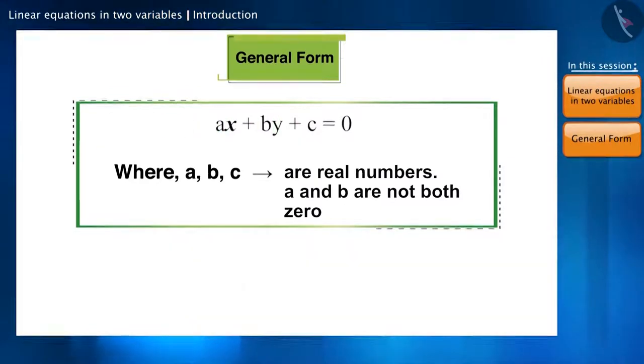Friends, an important point here is that a, b, and c are real numbers and both a and b cannot simultaneously be zero. Can you tell me why is this so? If both a and b become zero, both X and Y terms become zero and we will be left with only a constant.